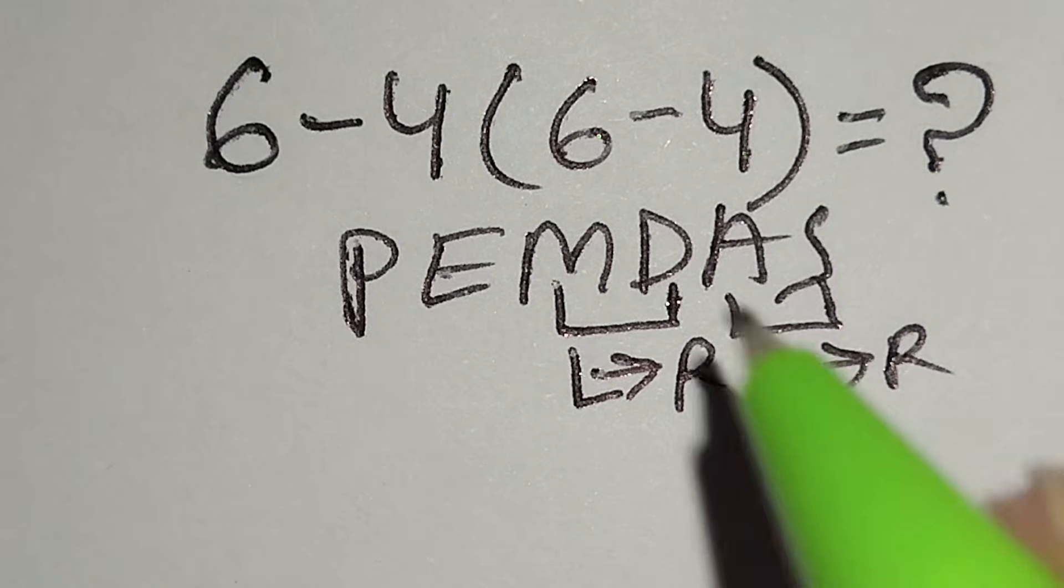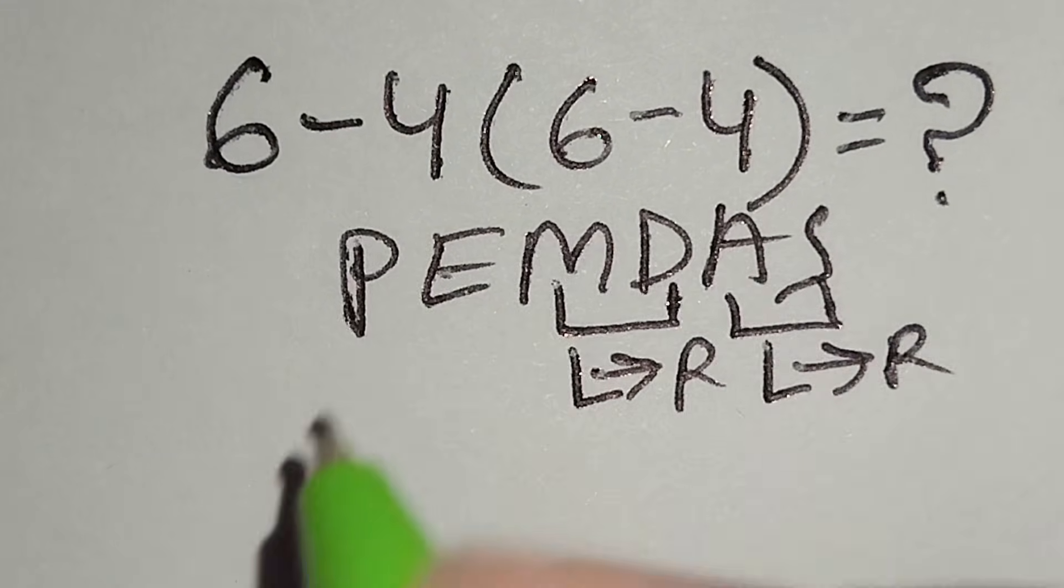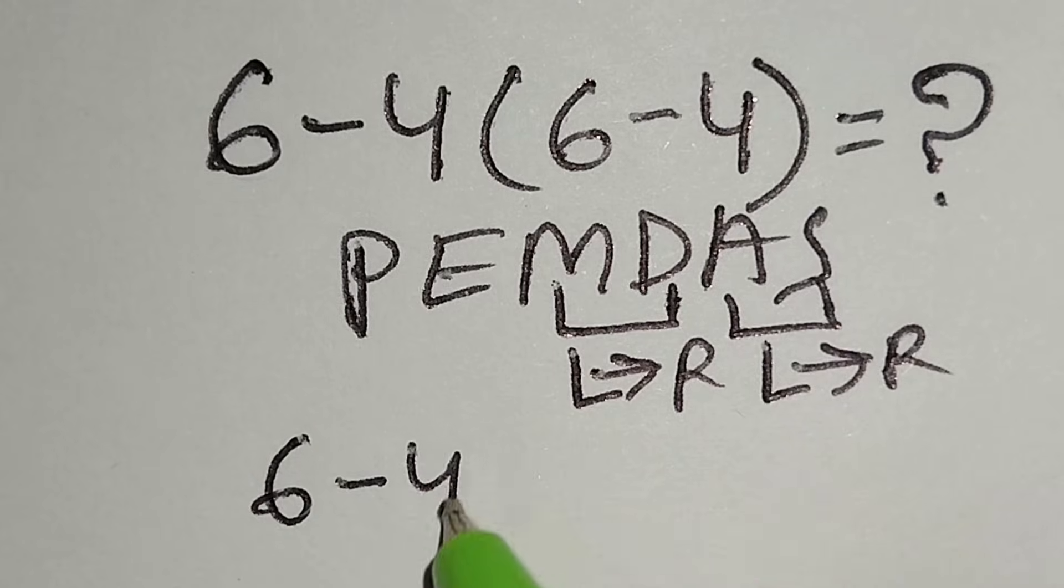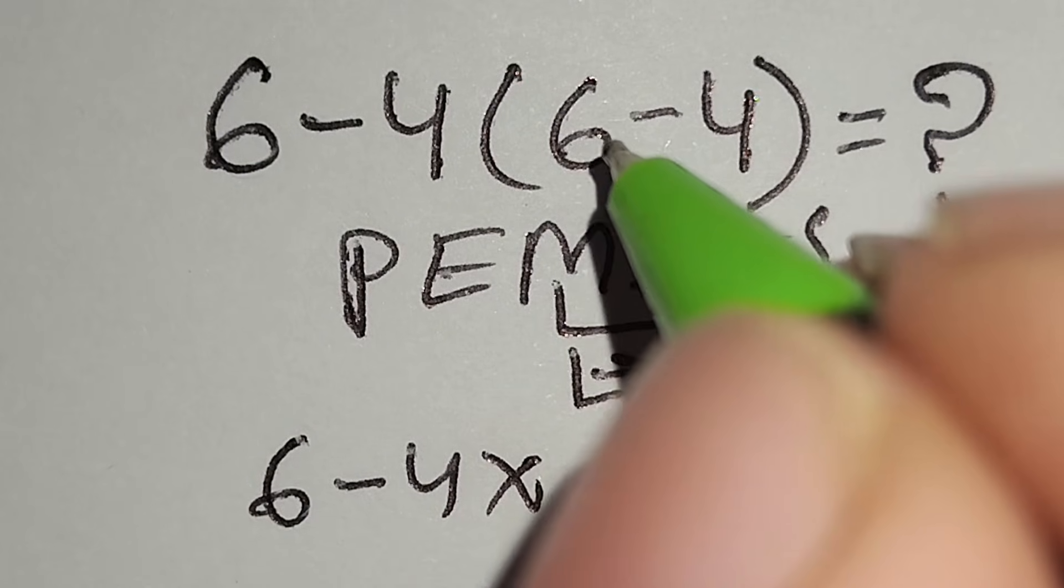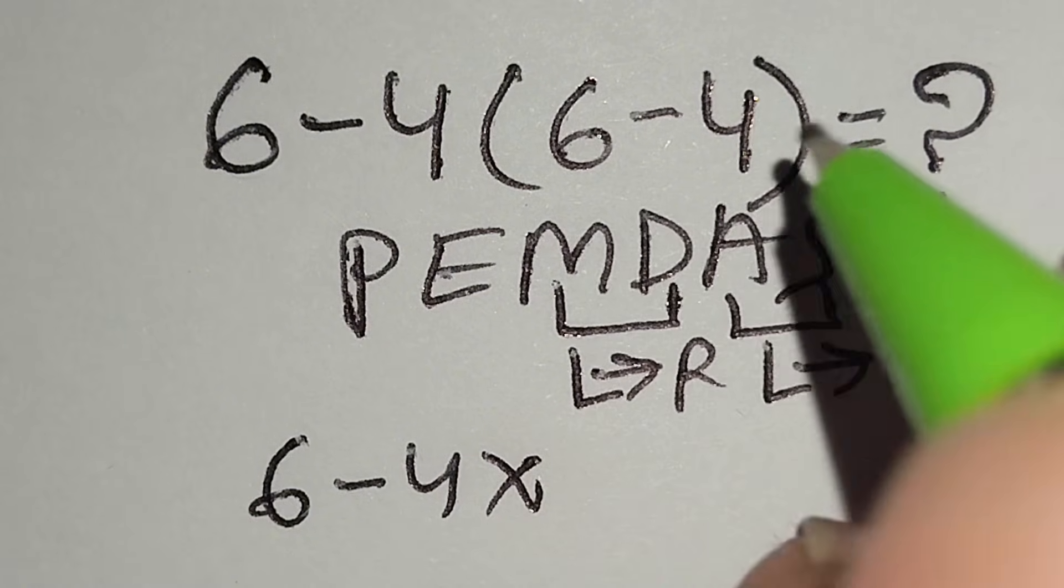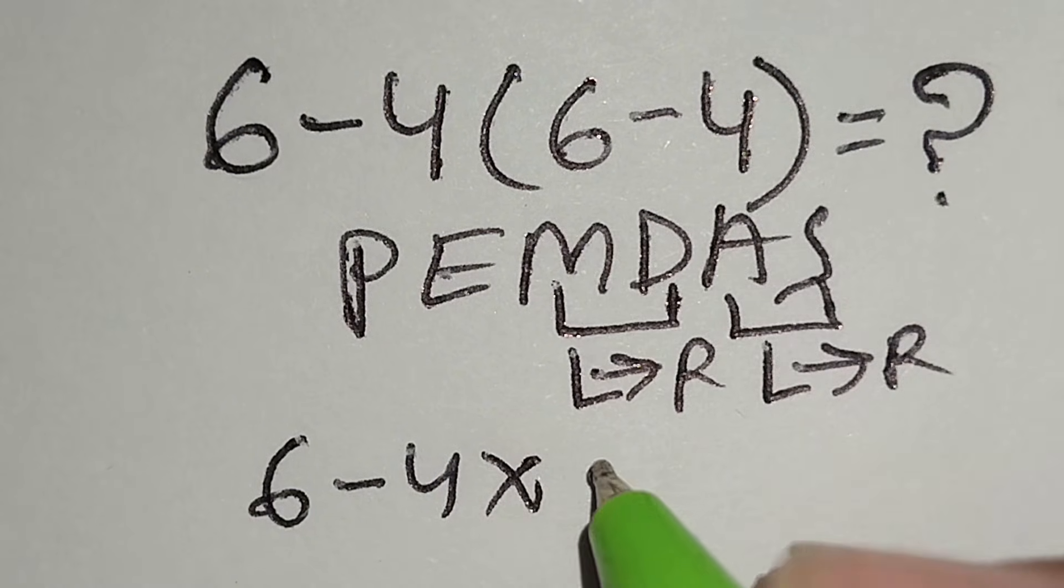Therefore, at first we have to work with this parenthesis. Here 6 minus 4 multiply. Here inside parenthesis we have 6 minus 4. So we can write 6 minus 4 gives us 2.